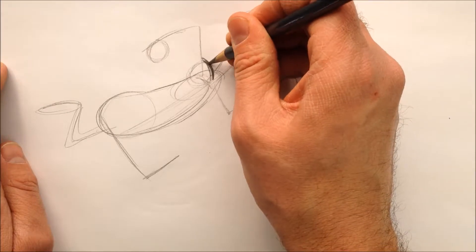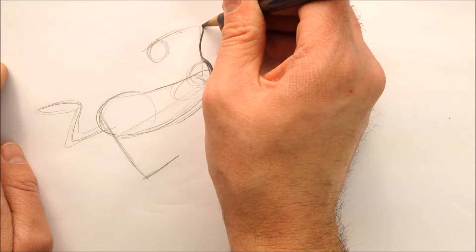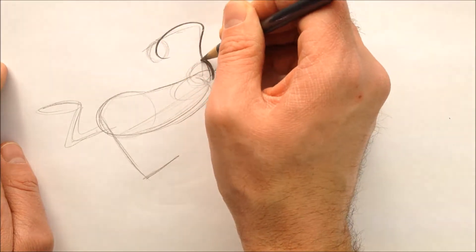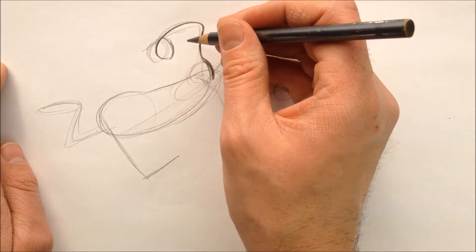His front arm, we're going to make sure we get that shoulder in, curve, and we're just going to make one nice curve all the way around. Circle for the hand.